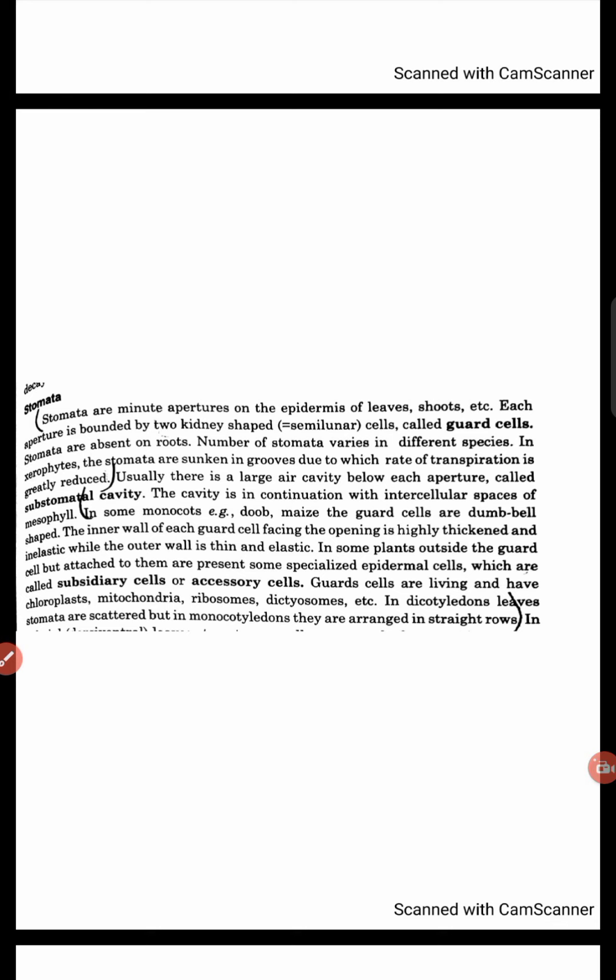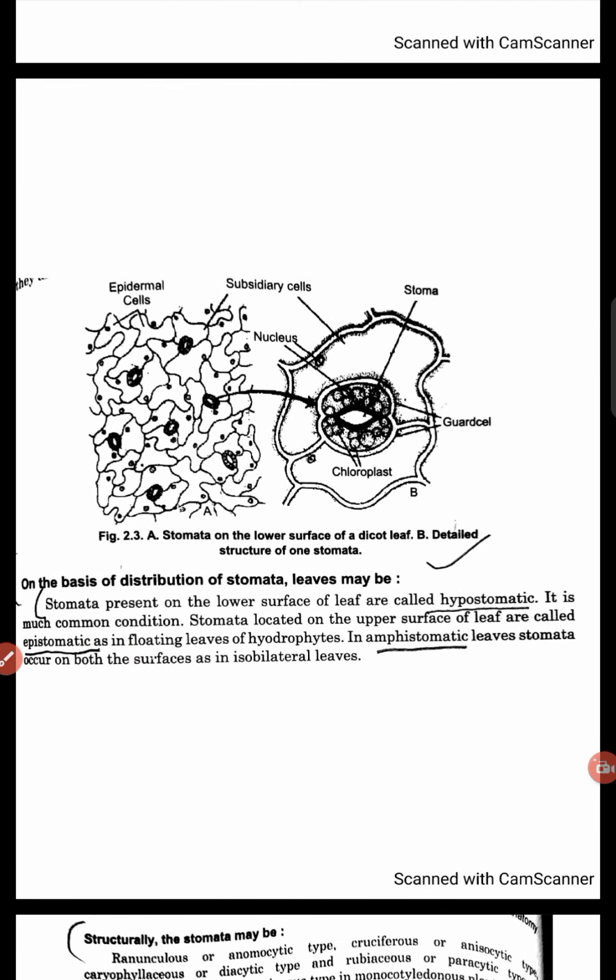The guard cells are living and also have chloroplasts, mitochondria, and ribosomes. These cell organelles are scattered in the leaves. When in monocotyledons, we can see that they are arranged in straight rows.